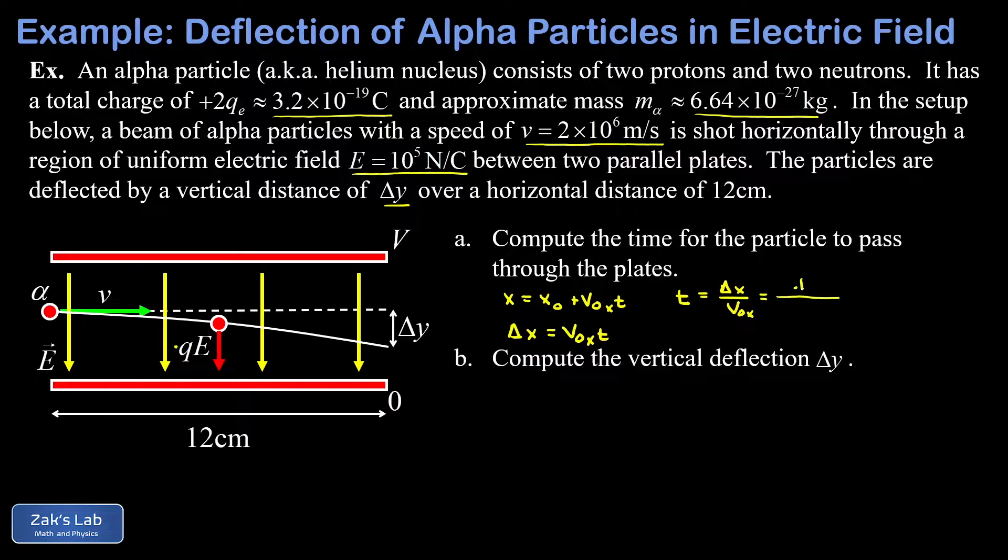So my delta X is 12 centimeters or 0.12 meters. My velocity in the X direction throughout this entire process is 2 times 10 to the 6 meters per second. And when we run the numbers on this to three significant digits, we get 6.00 times 10 to the negative eighth seconds.